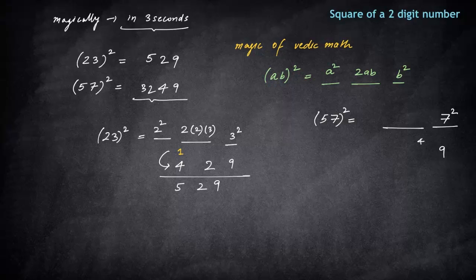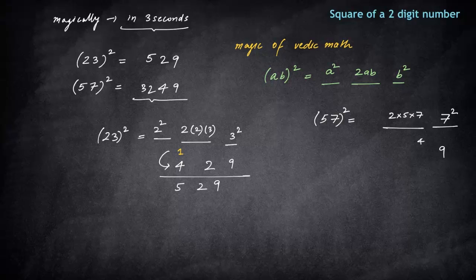The second spot will be filled by 2ab. That is 2 into 5 into 7. This is nothing but 70, 7 carry forward.